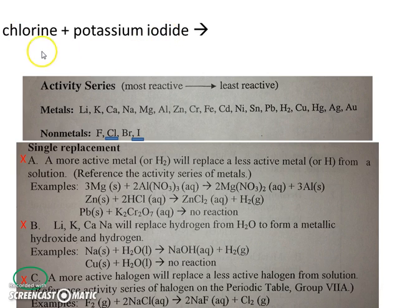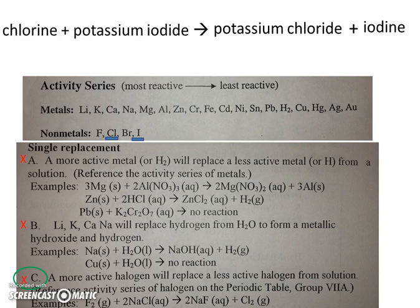Often times students will try to take chlorine and have that take the place of potassium, but that's not correct. What we have is chlorine replacing another halogen. So instead of potassium iodide, we'll have potassium chloride. And the iodide will precipitate out of the solution probably as solid iodine.